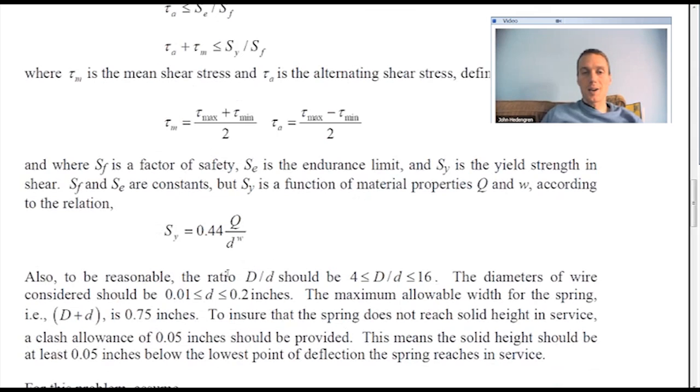We have a ratio. The diameter of the spring divided by the diameter of the wire has to be between 4 and 16. So you can't have something that's very skinny wire, very large diameter, or very fat wire, very small coil diameter. It has to be between those ranges.